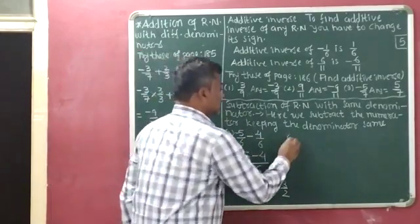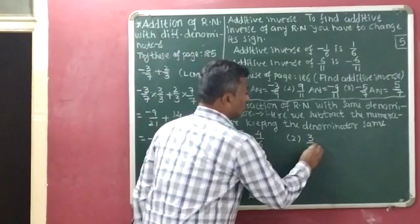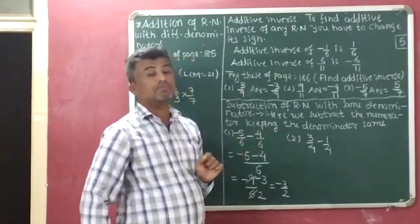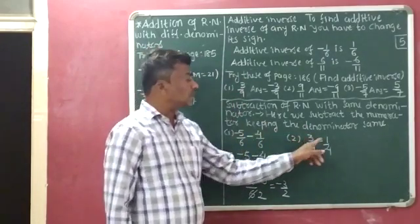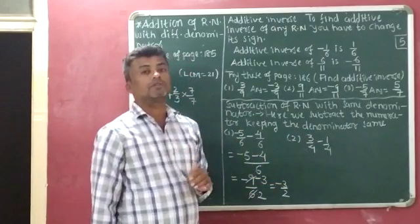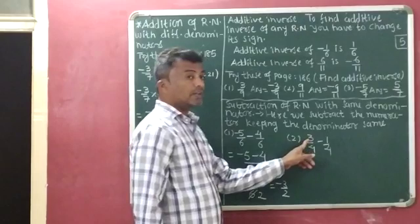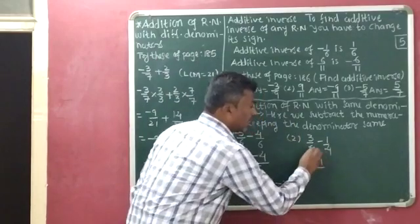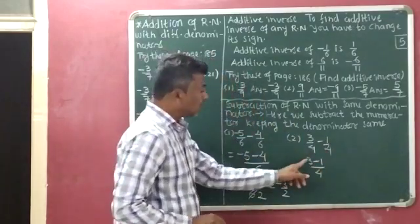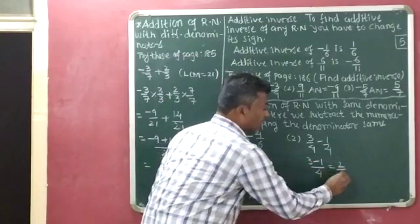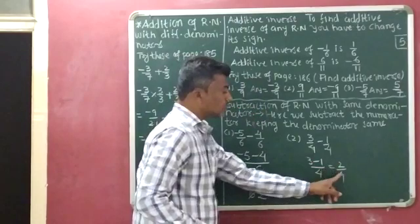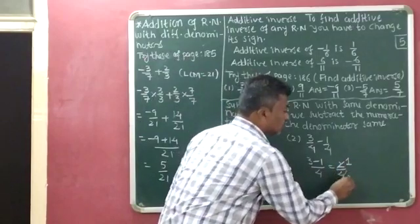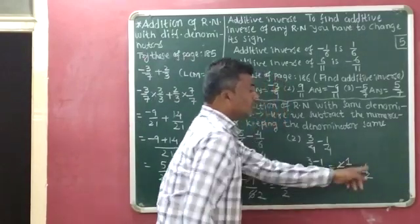Now let's discuss one more question: 3 by 4 minus 1 by 4. Both rational numbers have the same denominator 4. According to the rule, we subtract the numerators and write the denominator the same. The numerators are 3 and 1, so we get 3 minus 1 over 4. 3 minus 1 equals 2, giving us 2 by 4. Since 2 and 4 can be simplified — 2 ones are 2 and 2 twos are 4 — the final answer is 1 by 2.